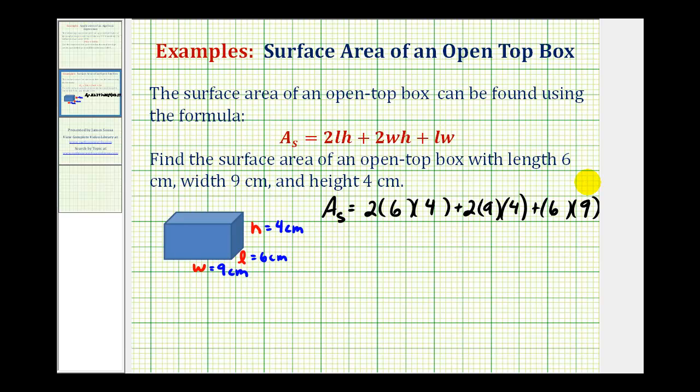Now following the order of operations, we'll multiply first. So we'll find this product, this product, and this product, and then we'll find the sum. So 2 times 6 is 12, times 4 is 48, 2 times 9 is 18, 18 times 4 is equal to 72, and 6 times 9 is equal to 54.